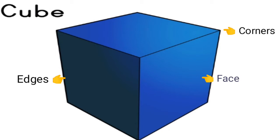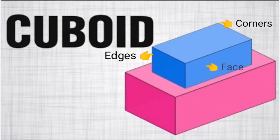Our next figure is cuboid. A cuboid has 6 faces, 12 edges and 8 corners.